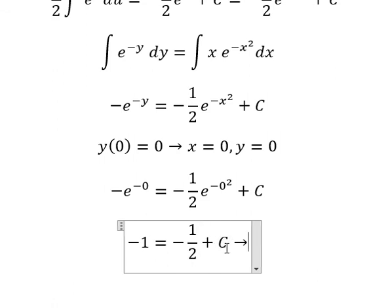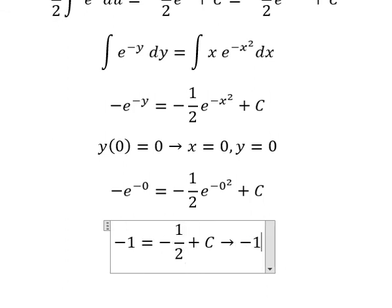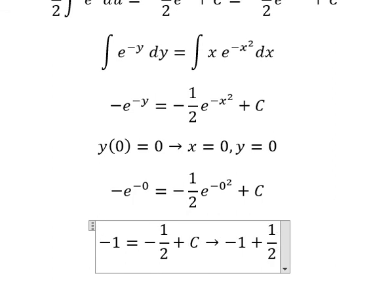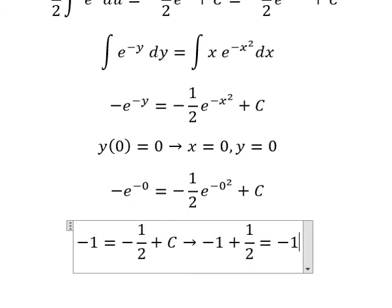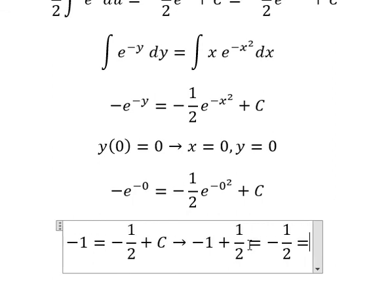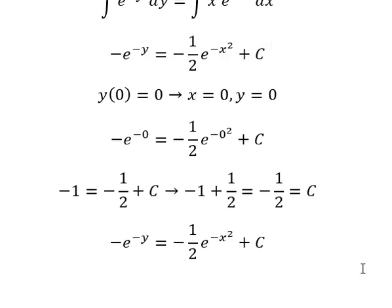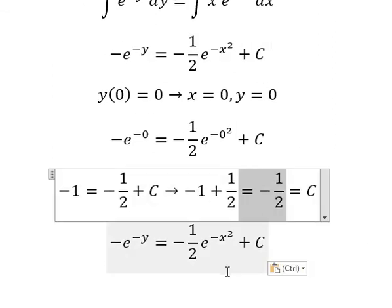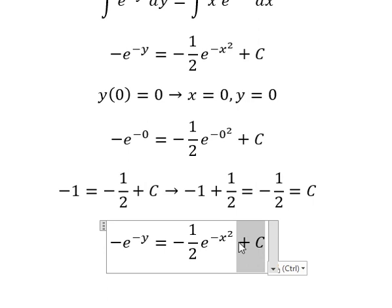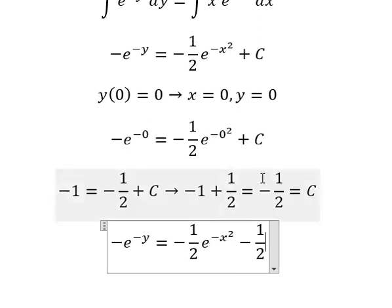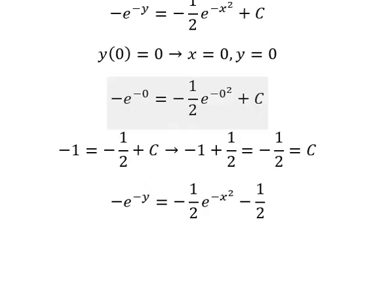Moving negative one-half to the left side, we have negative 1 plus one-half equals negative one-half equals C. So we substitute this value for C in our solution. This is the end, thank you for watching.